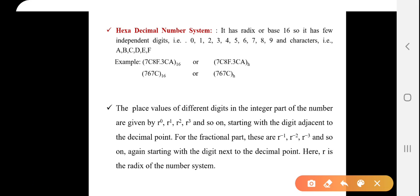So 7c8f.3ca is our hexadecimal number. Also, 767c is also our hexadecimal number.